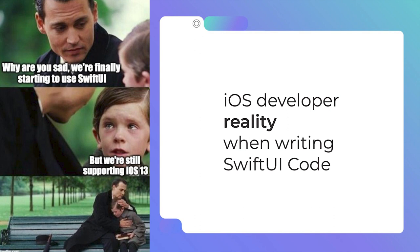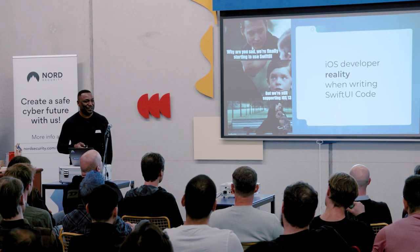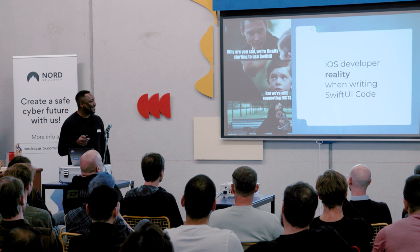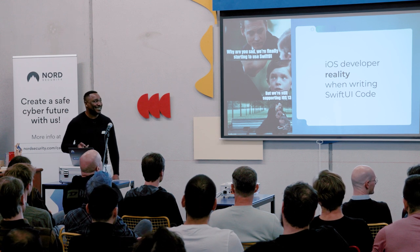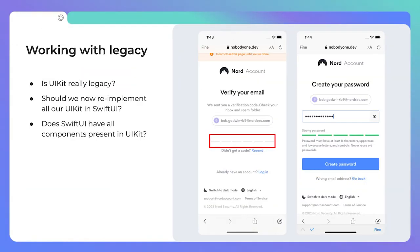Then reality comes into play: you're writing SwiftUI code and then they tell you you need to support iOS 13. Would you take this requirement from your product owner? What would you do? Just say no, I don't support iOS 13, or something like that. Anyway, back to the problem we want to solve.